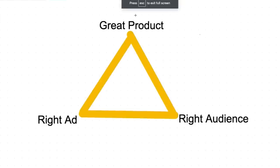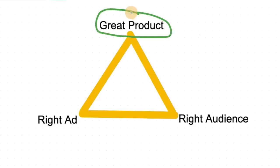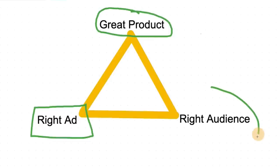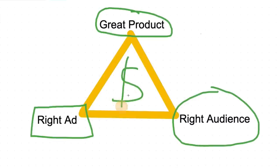What you see on the screen here is what I call the Golden Triangle. It illustrates the relationship between the three most important things you need to get right for all this to work. It all starts with a great product — and what defines a great product? For the most part, it's a product that people want to buy. You want a great product, combine that with the right ad, and the right audience — which we'll accomplish with the testing process I'm going to give you. Those three combined together, that's how you win. And if you're missing any of the three, you don't get the gold.